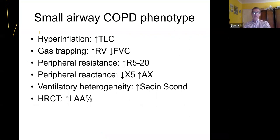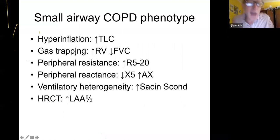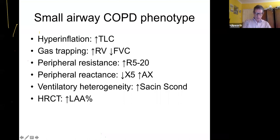Moving on to COPD: a typical phenotype of a patient with COPD and small airways disease — which most COPD patients have — would show hyperinflation with increased total lung capacity, air trapping with increased residual volume and reduced vital capacity, increased peripheral resistance, increased peripheral reactance as a reduced X5 or increased AX. If you performed multiple breath nitrogen washout, you'd find ventilation heterogeneity in S-acinar or S-conductive measures, and a high resolution CT would show increased lower attenuation areas.